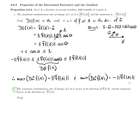Property two: the maximum instantaneous rate of change of f at a, which we know has value equal to the norm of the gradient, occurs in the direction of the gradient. Part one told us the maximum value but not where to find it. Part two tells us where you'll find it — when u-hat points in the direction of the gradient.